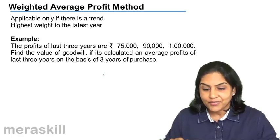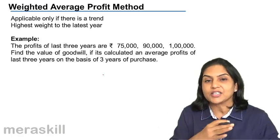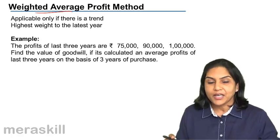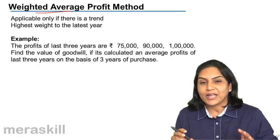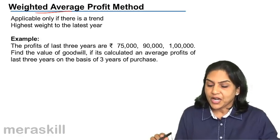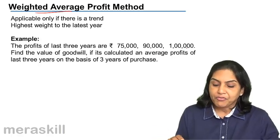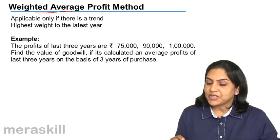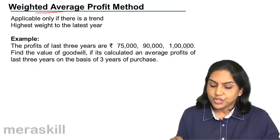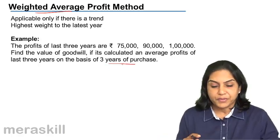In such a case when there is such a trend, either increasing or decreasing, we use a weighted average profit method where we use weights against the profits. For example, the profits of the last three years are 75,000, 90,000, and one lakh. Find the value of goodwill if it's calculated on an average profit of the last three years on the basis of three years of purchase.